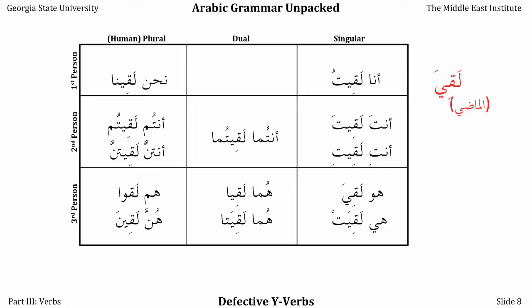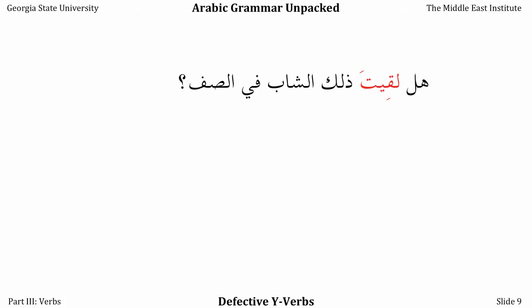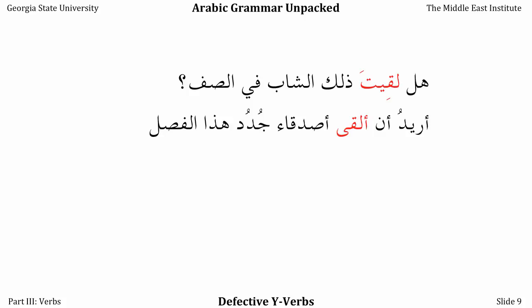We can use these verbs in sentences: Hal laqiyah thalika shabh fi saff? — Did you meet that guy in class? Ureed an alqa asdiqa' judud hadha al-fasl — I want to meet new friends this semester. Note that judud is the human plural of jadeed.